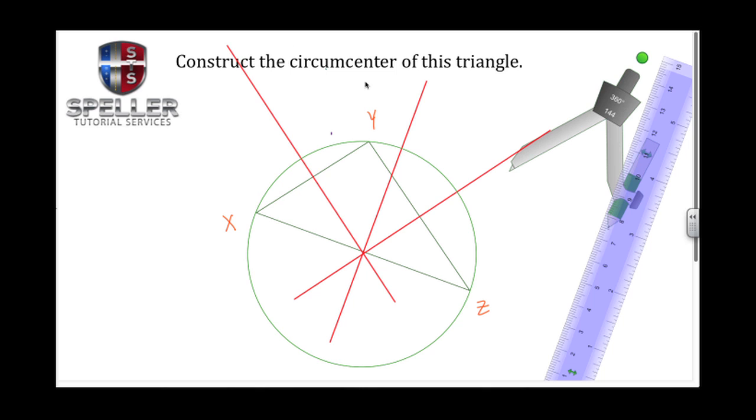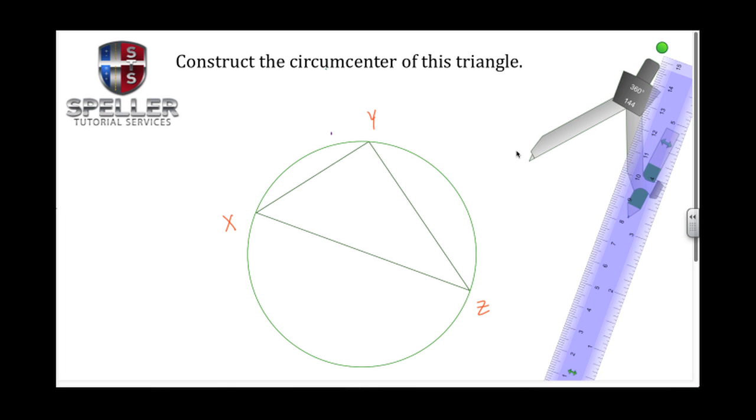Let's get rid of that line, this line, and this line. We see that by finding that circumcenter, we were able to circumscribe this triangle within the circle.